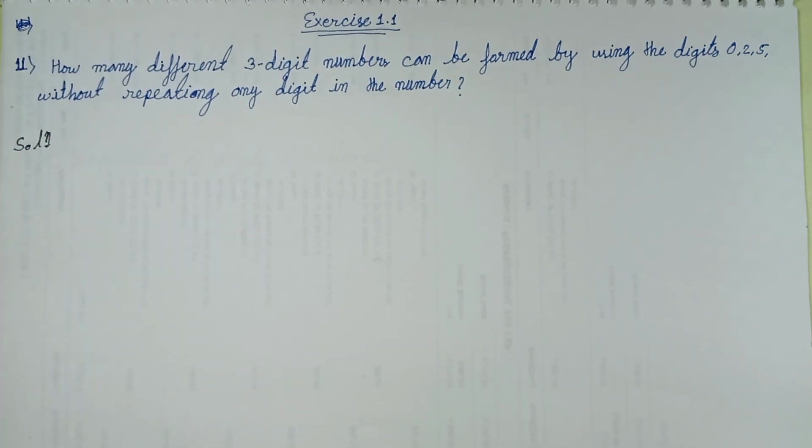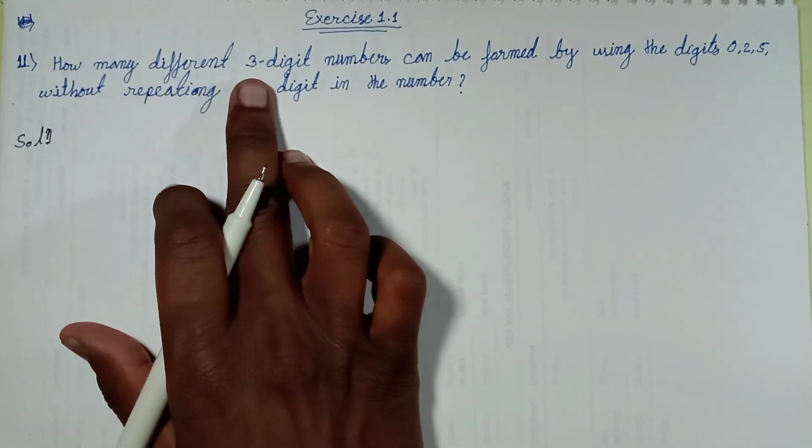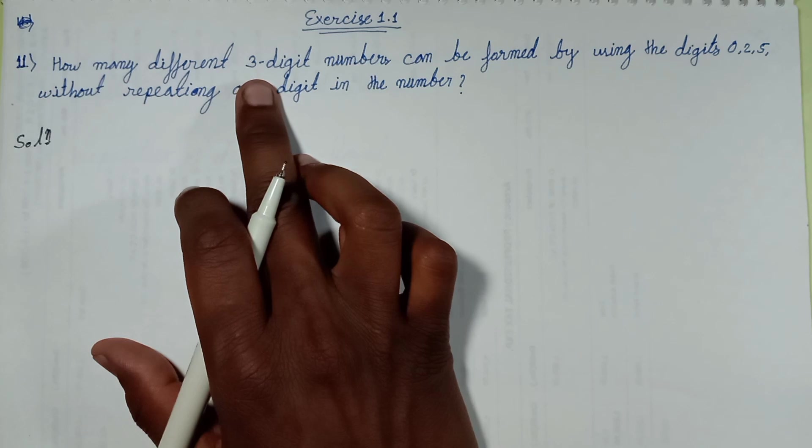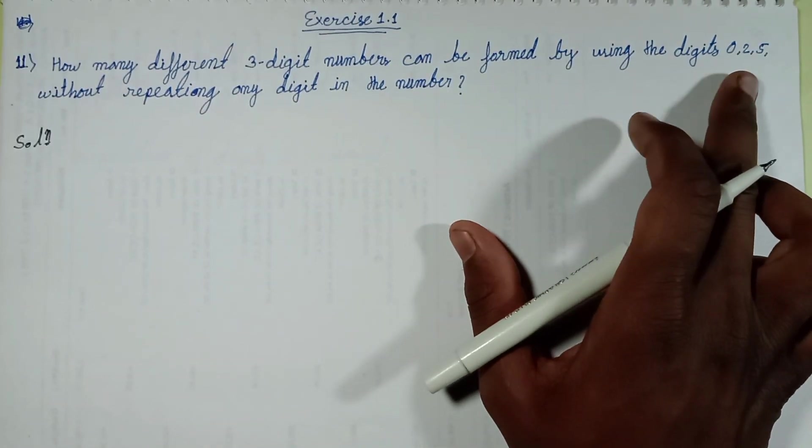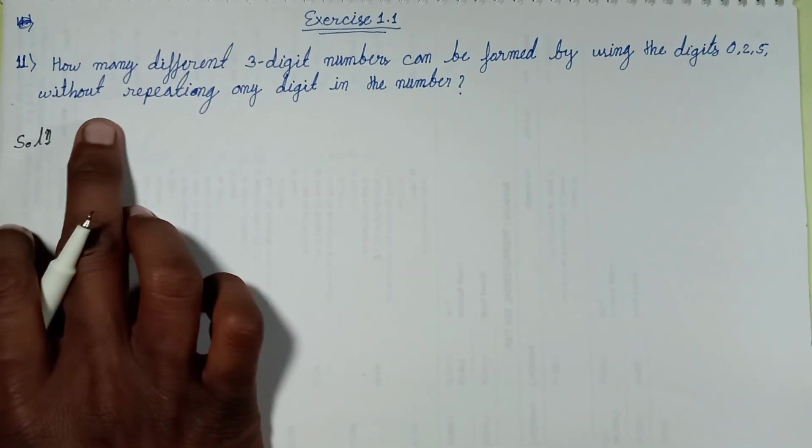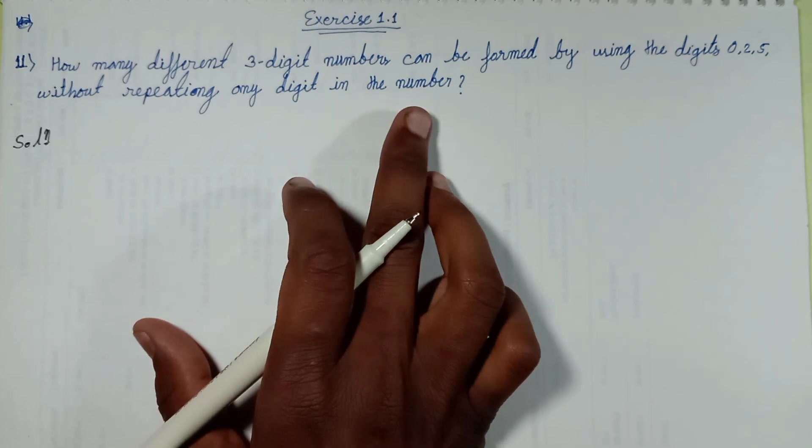Given in question: How many different 3-digit numbers can be formed by using the digits 0 to 5 without repeating any digit in the number?